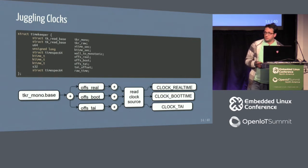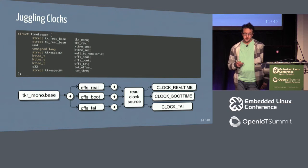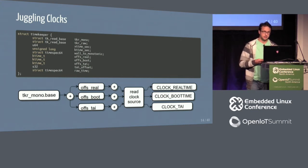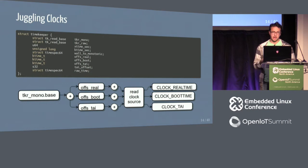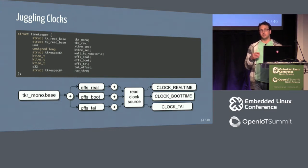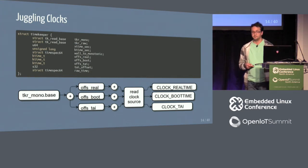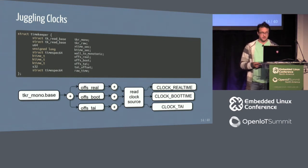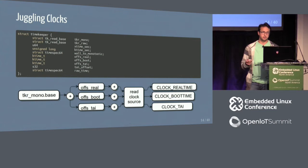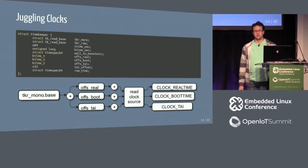Once we have this, we can support multiple timelines by accumulating into this accumulator. To support CLOCK_REALTIME, CLOCK_BOOTTIME, and CLOCK_TAI, we take the accumulated base time, add an offset, and then add the time from the last cycle read to the current cycle counter. Everything is conceptually just an offset from this one true timeline we're maintaining — all POSIX clocks are basically just an offset.